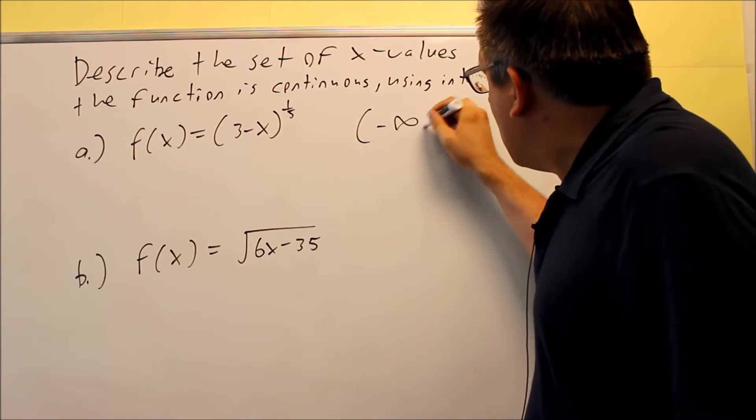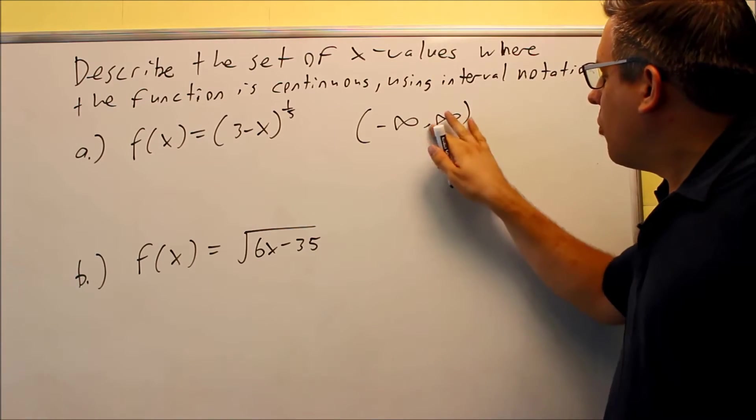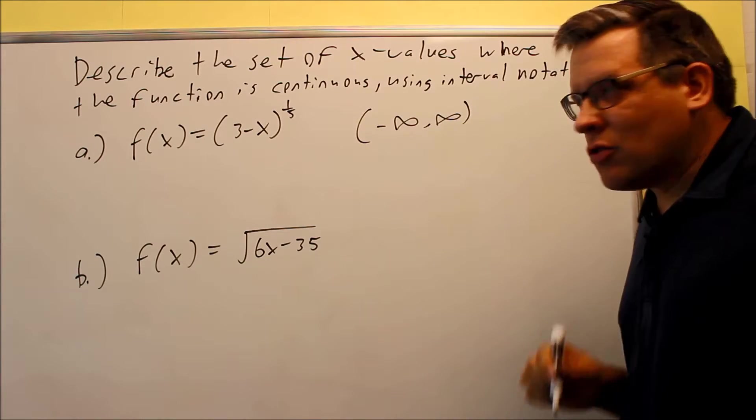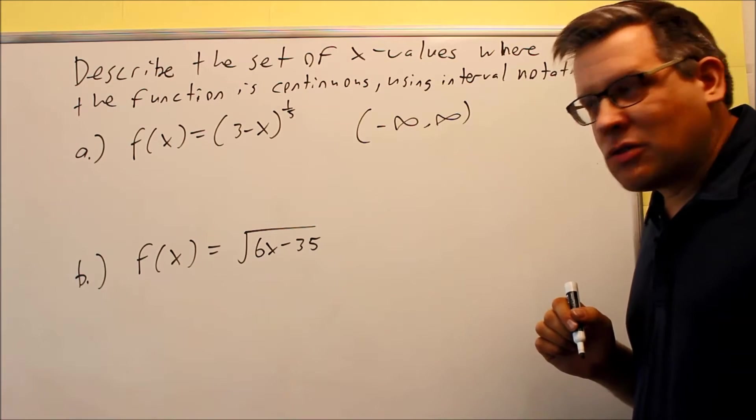So what you would say for the answer on this, since it asks us to use interval notation, is you would say it's continuous from negative infinity to positive infinity. There's no place where it's ever going to be a hole or some kind of vertical asymptote.